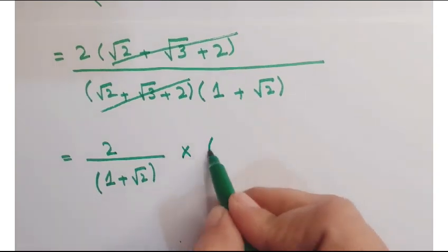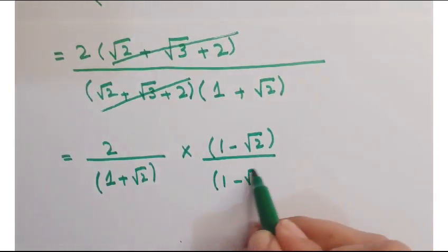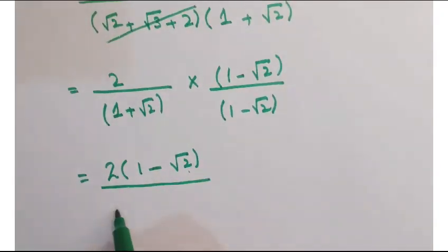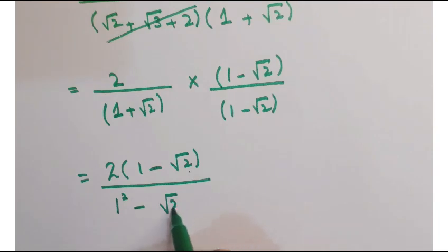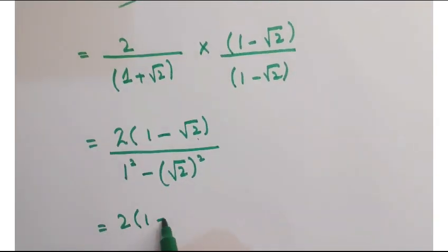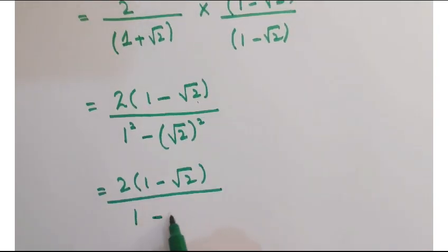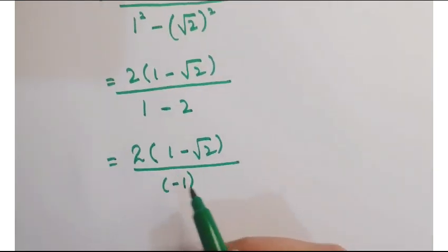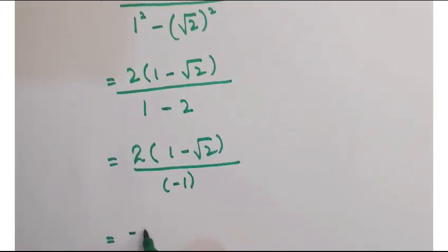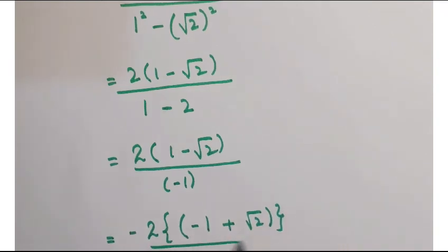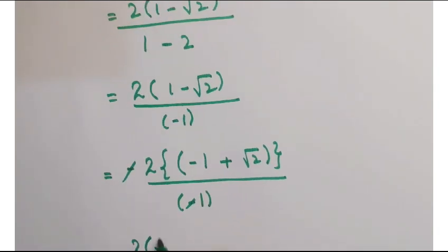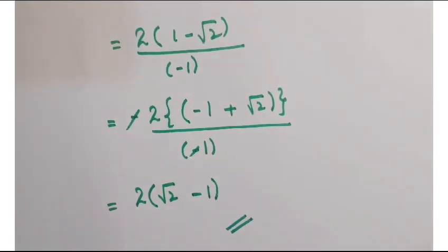Now, in order to rationalize it, multiply and divide by (1 − √2). So you get 2(1 − √2) upon (1 − 2), which gives 2(1 − √2) upon −1. To remove the negative sign, take out the minus sign common from the numerator, and the two negatives cancel. So you get 2(√2 − 1), and this is the final answer after simplification.